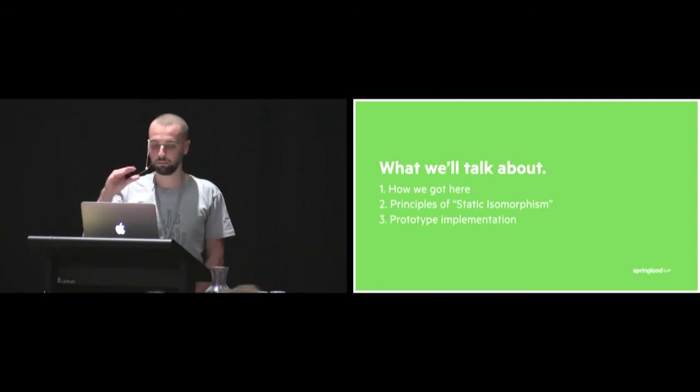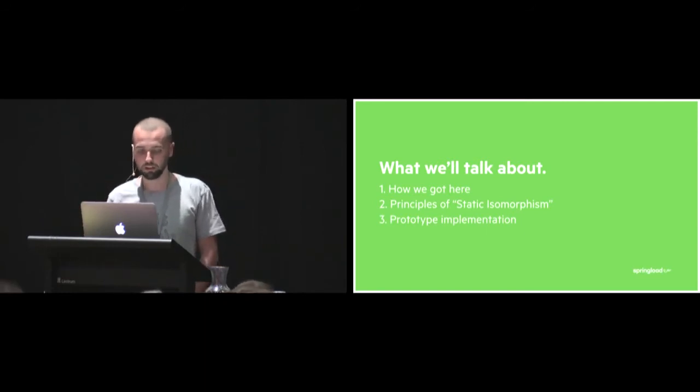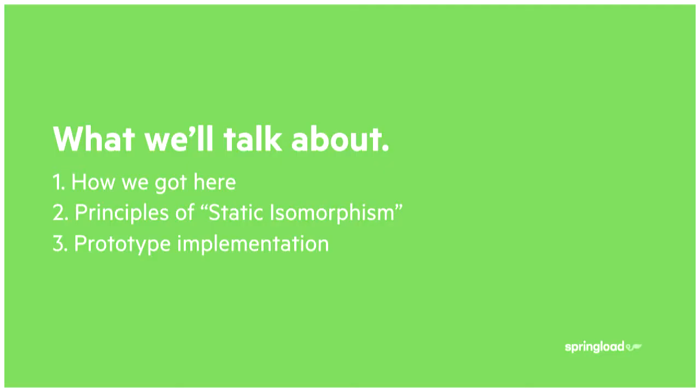This is what we're going to talk about through the structure: first, how we got here — how the ecosystem of JavaScript has evolved and progressed, and how the tools have led us to this point. Then the principles of this architecture — static isomorphism — that I've been working towards. And then we're going to stress test this idea and see if we can poke any holes in it with a prototype that I've been playing around with.